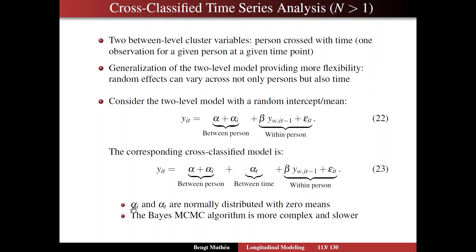Here, the between-person alpha sub i and alpha sub t are each normally distributed with zero means. It's a more flexible model, and you have full structural equation modeling possibilities for both the within-person, between-person, and between-time parts of the model. The base Markov chain Monte Carlo algorithm, however, is more complex and therefore slower.